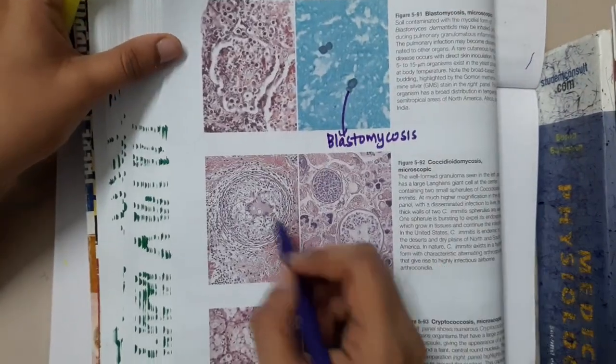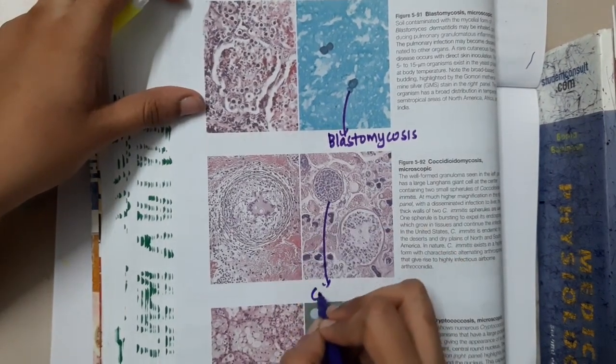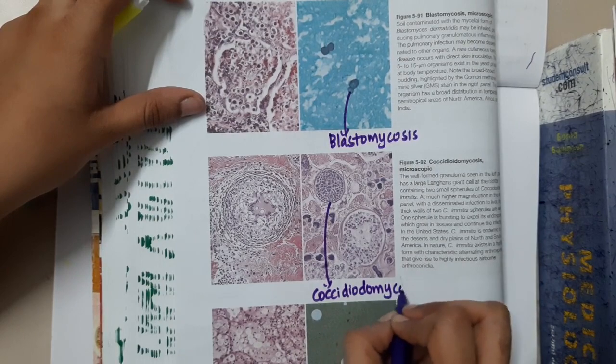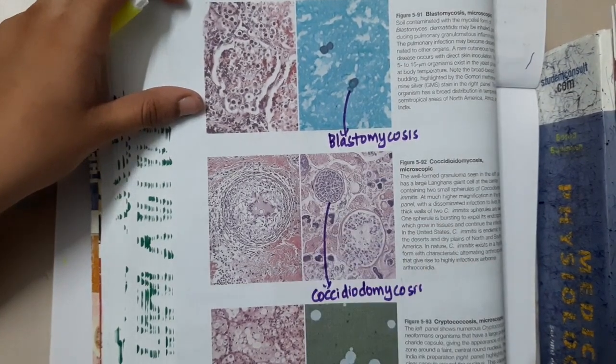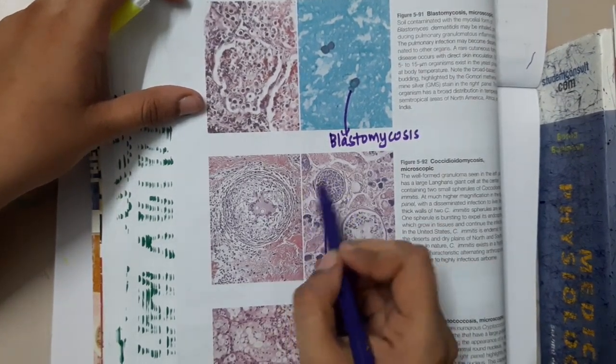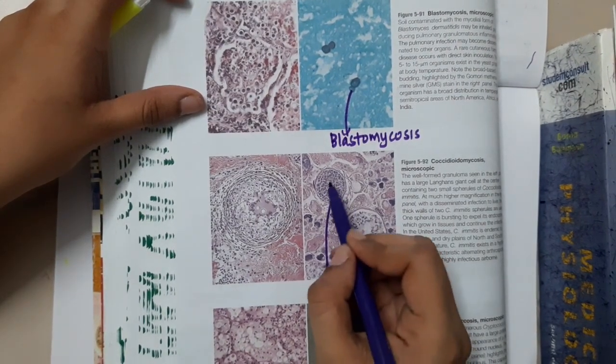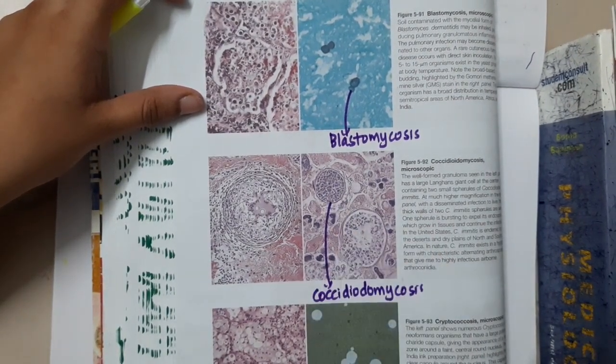If you see, this is the picture showing coccidioidomycosis. This is coccidioidomycosis which is shown here with a spherule present and many spores present inside it.